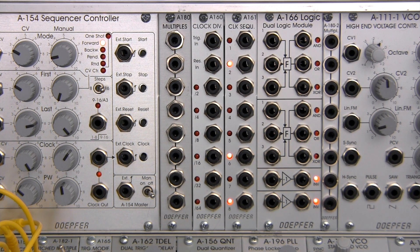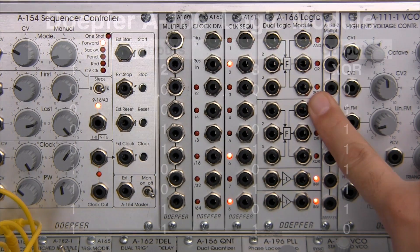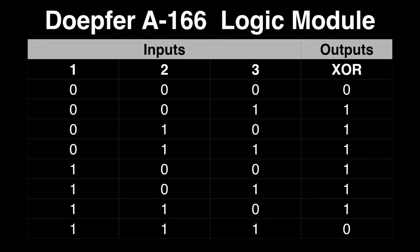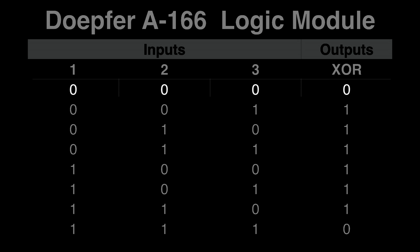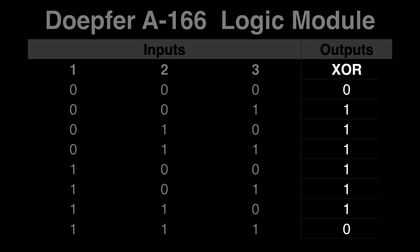Now let's look at the final output, the XOR output on the truth table. This is also referred to as the exclusive OR gate. While this pattern is similar to the OR, there's a slight twist in its logic. When all three inputs are low, your XOR output is low, just like the OR example. When inputs one and two are low and three is high, the output is high. You can see that the XOR output is high in almost every case, except for when all the inputs are low or all the inputs are high. So there's your twist.